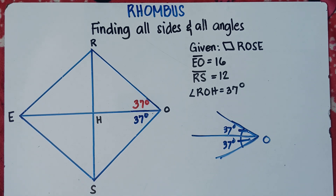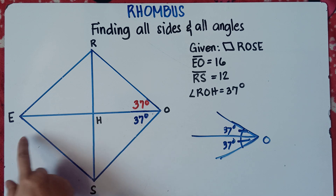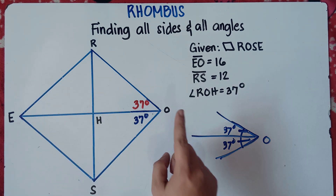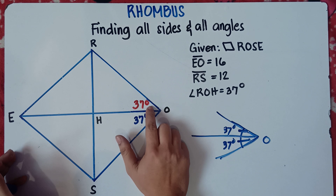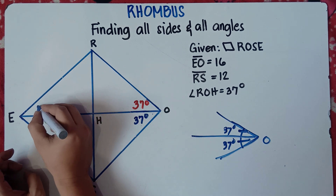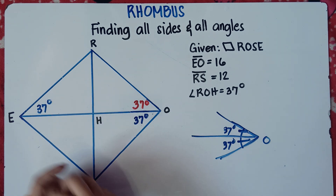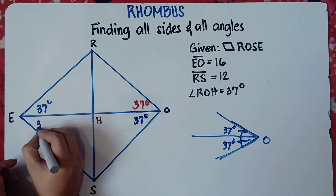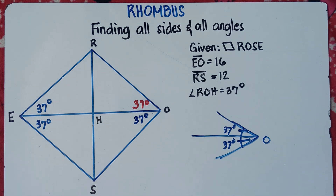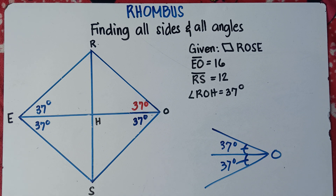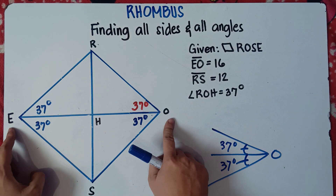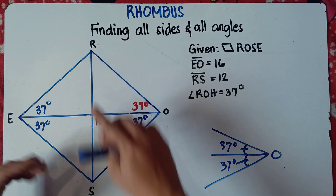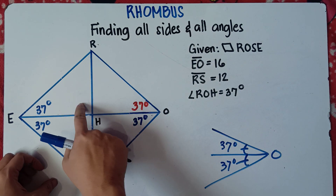The next property to remember is that opposite angles are congruent. Angle E is congruent to angle O. So if this is 37 degrees, this one is also 37 degrees. Similarly, angle REH is 37 degrees because opposite angles are congruent. Now, one more property of a rhombus: diagonals are perpendicular. When diagonal EO and diagonal RS intersect, they form a 90-degree right angle.